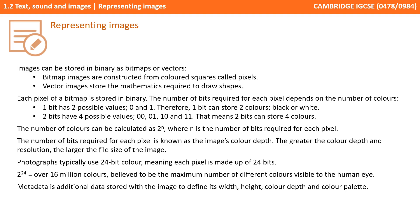Metadata is additional data stored alongside the image to define the width, height, colour depth, and colour palette. The greater the colour depth and resolution, the larger the file size of the image. Photographs these days are stored in 24-bit colour depth. Each pixel is 24 bits — this is 2 to the power of 24, or over 16 million colours: the number of different colours the human eye can see.